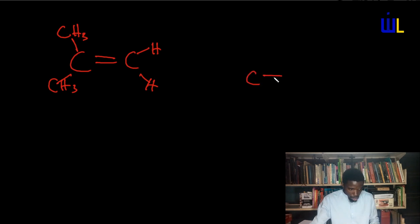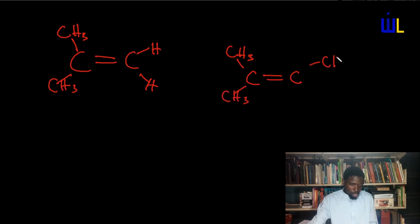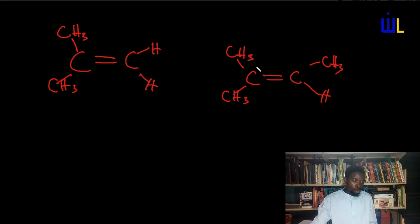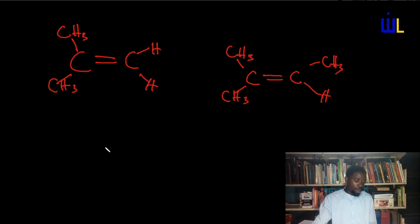Similarly, if you had a C double bond C with CH3 and CH3 on one carbon, and CH3 and hydrogen on the other, this too cannot exhibit geometric isomerism, because the first carbon has methyl and methyl — the same species — so automatically this cannot exhibit geometric isomerism. To exhibit geometric isomerism, let's consider a compound like but-2-ene.